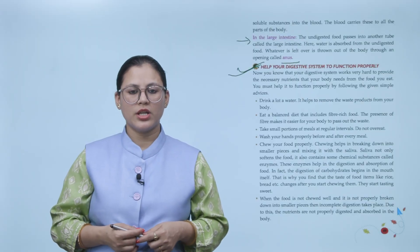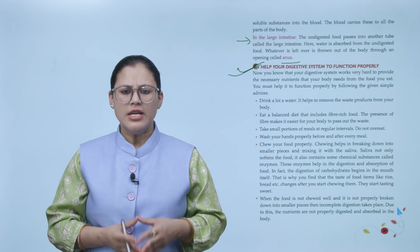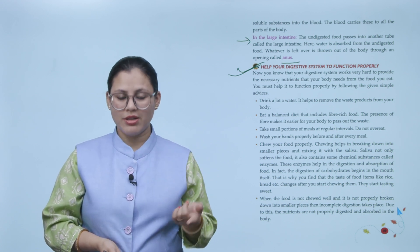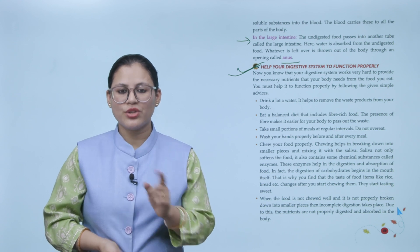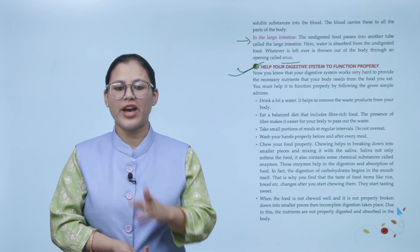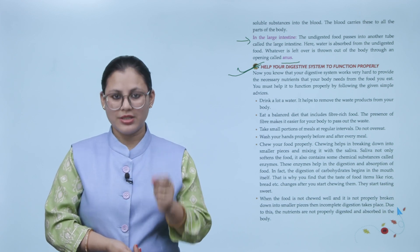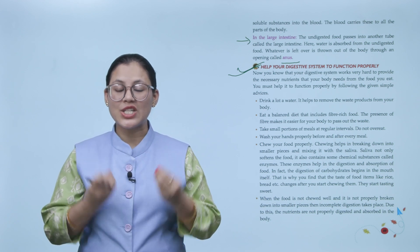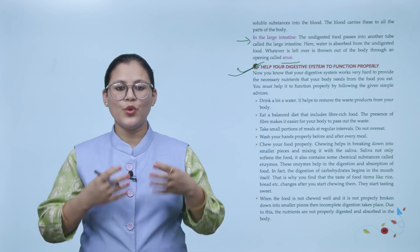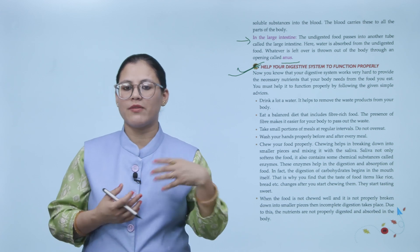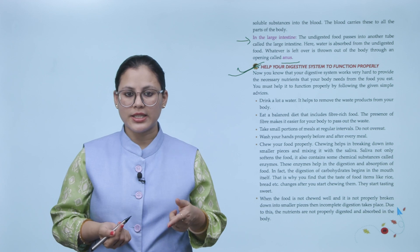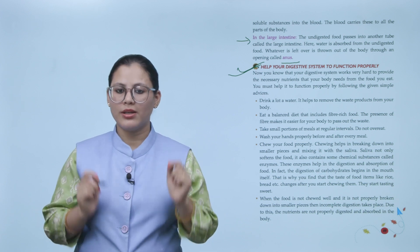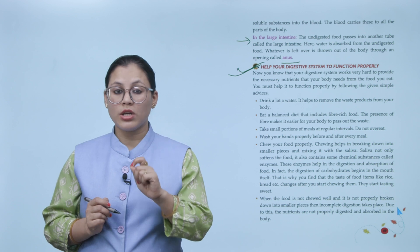Chew your food properly. Chewing your food helps in breaking down into smaller pieces and mixing it with the saliva. Saliva not only softens the food, it also contains some chemical substances called enzymes. These enzymes help in the digestion and absorption of food. In fact, the digestion of carbohydrates begins in the mouth itself. That is why you find that the taste of food items like rice, bread etc changes after you start chewing it. They start tasting sweet. When you eat your food, eat well. Because when you chew your food, it will break down in smaller pieces and then it will be mixed with saliva. Saliva softens the food. With it, there are some chemical substances called enzymes that help in digestion and absorption. And as you can tell, the digestion of carbohydrates starts from the mouth. That is why when you eat rice, bread or chapati, if you chew it a bit, the taste will change a bit.